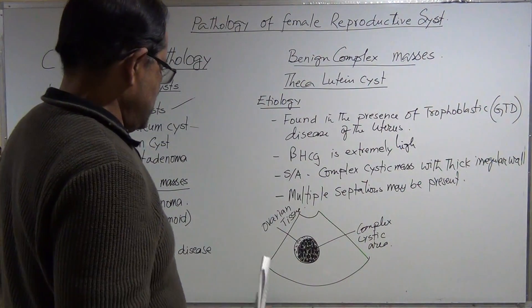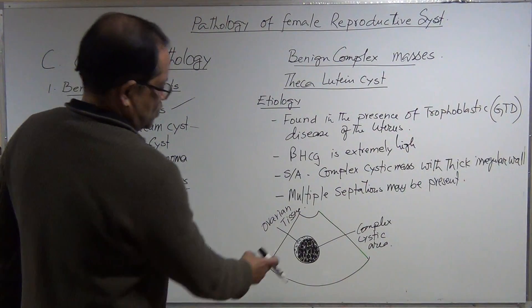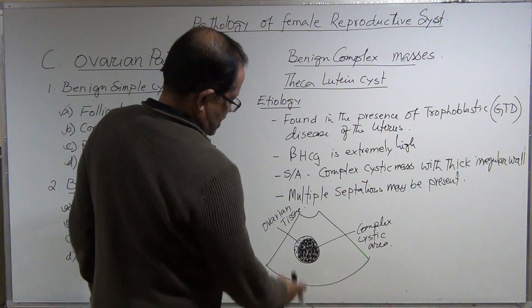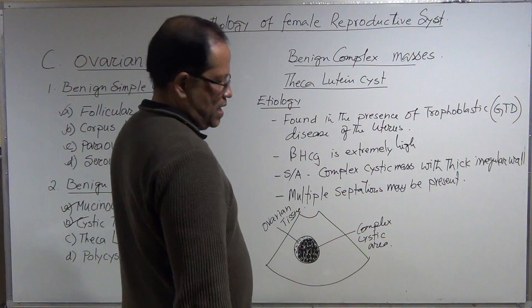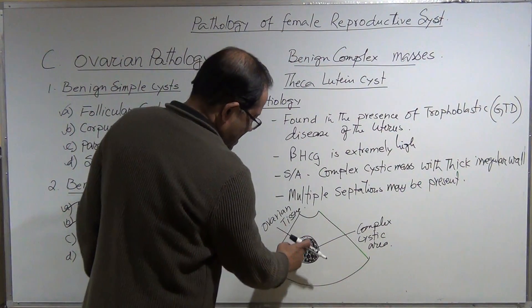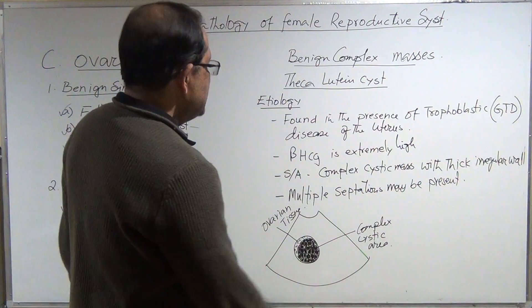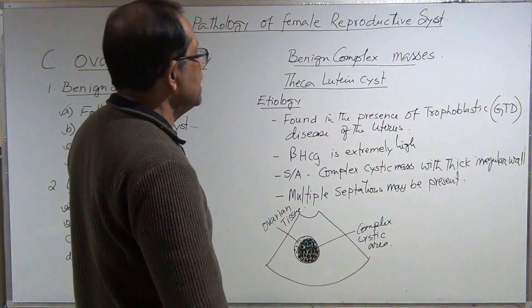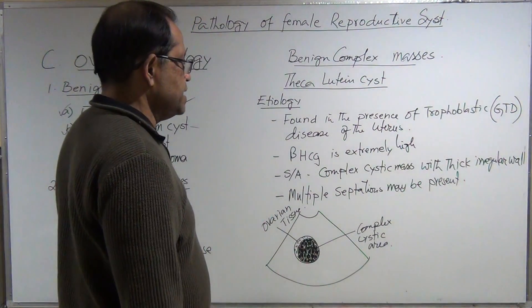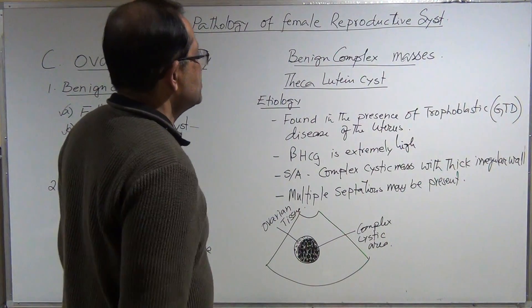If you see this, then you have to measure the complex area. You need to measure the ovary and compare with beta hCG. Take the history from the patient.